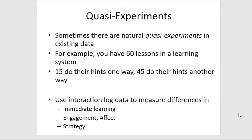Another big category is quasi-experiments. Sometimes we don't even need to do an A-B test — there are natural quasi-experiments in existing data where we can construct an experiment from what's already happened. For example, let's say we have a learning system with 60 lessons, and 15 of those lessons do their hints one way, and the other 45 do their hints another way.